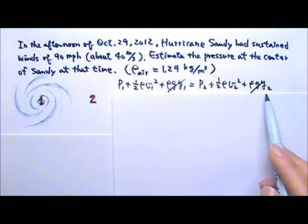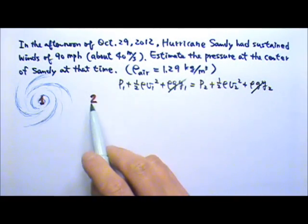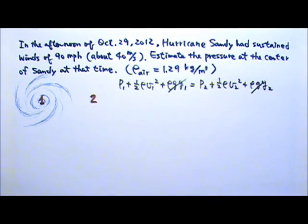The rho GY terms can cancel because we're looking at 1 and 2 at the same height, which is usually at the sea level for weather readings.